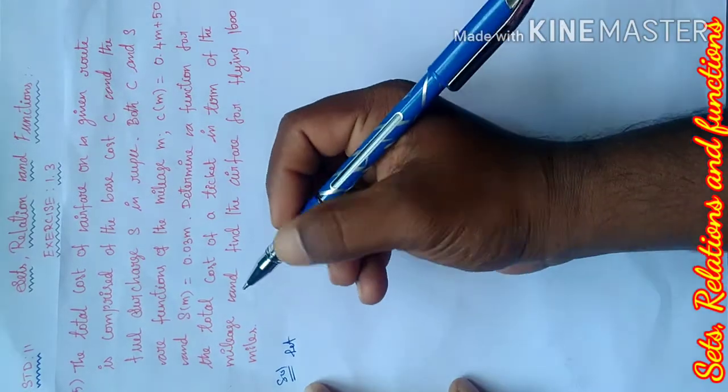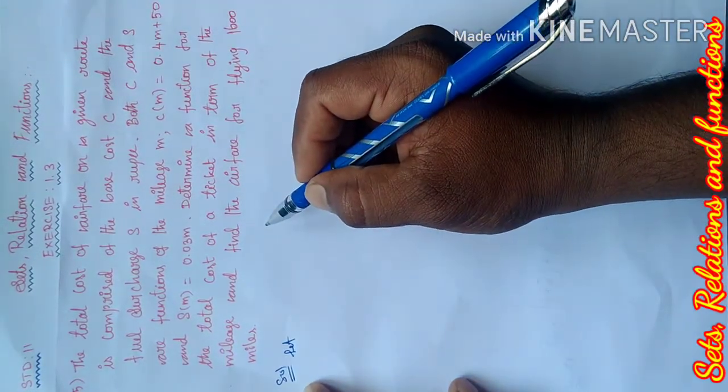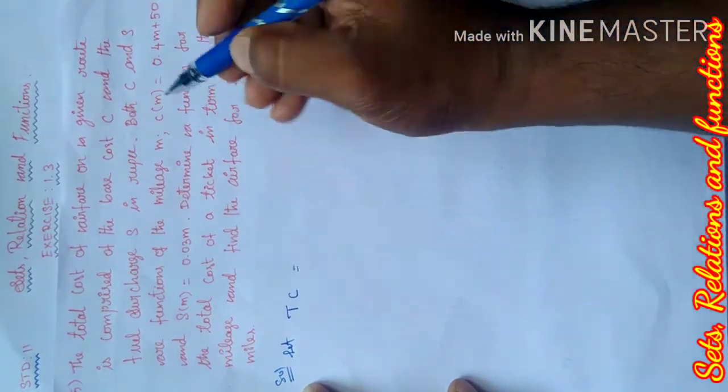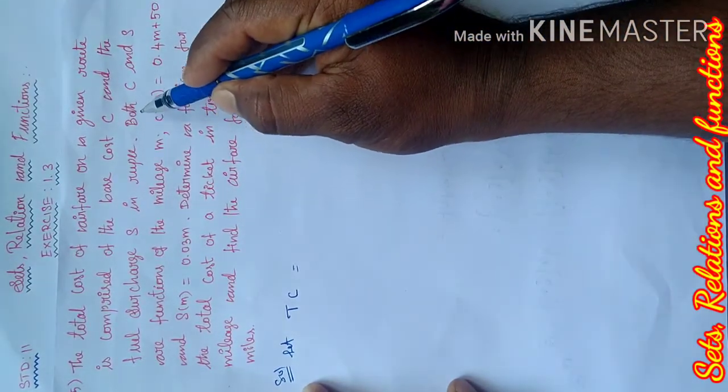Let's find the total cost. Total cost TC equals, both means add. What do we need to add?